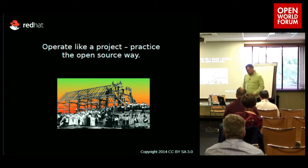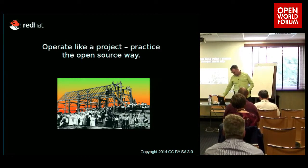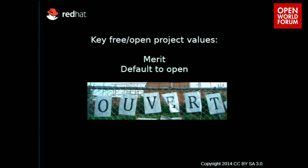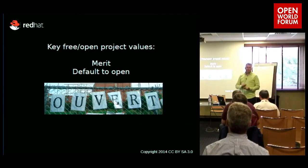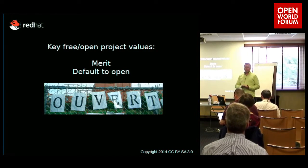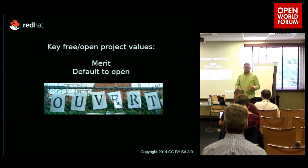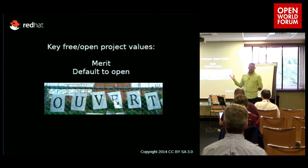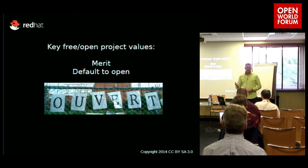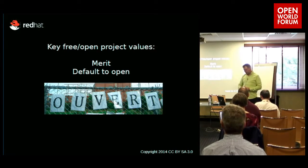One of the keys to the Open Source Way is making sure that merit is respected — that people are allowed to come in, prove who they are and what they can do, and gain control, access, and influence in the project. And radical transparency: default to open. If it doesn't happen on the mailing list, then it doesn't happen. These things are really important if you want to believe these values and gain the real benefits of open source software.